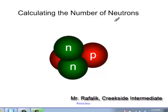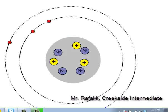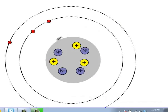In this session, we're going to focus on how to calculate the number of neutrons in an atom. Let's begin by reviewing what we know about an atom. In the center of an atom, we have the area known as the nucleus.